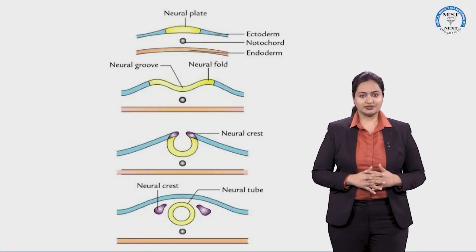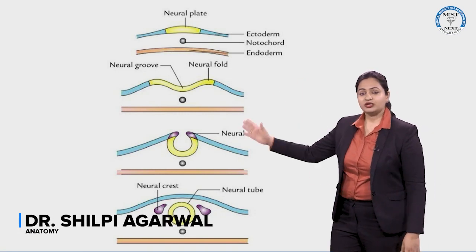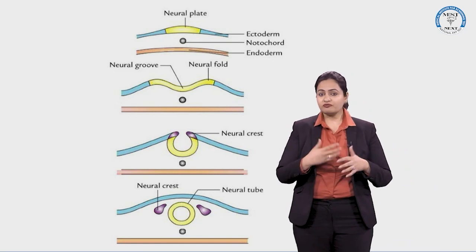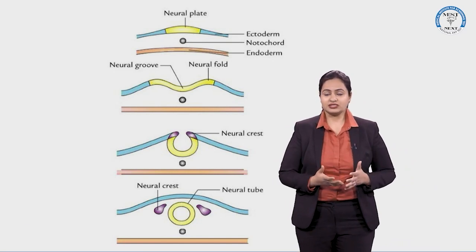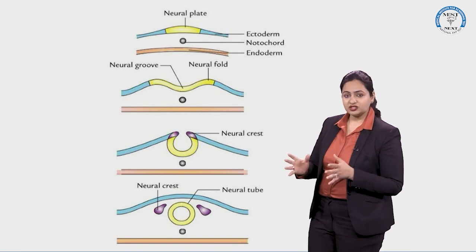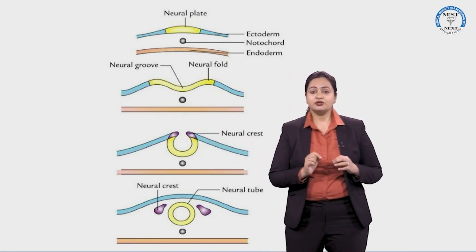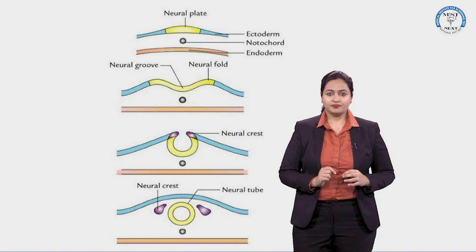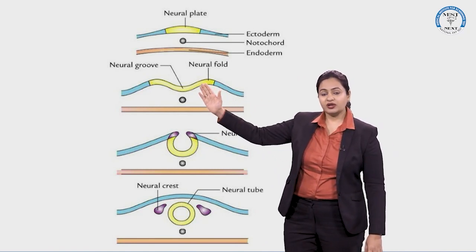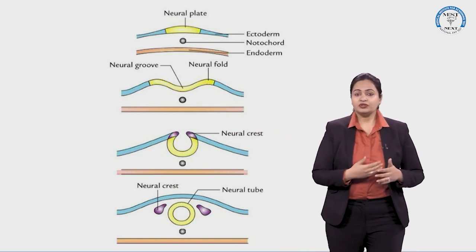Development of the central nervous system. For this, we should be aware of the formation of the neural tube, because the neural tube is the one which leads to the formation of the central nervous system. The neural tube formation is induced by the notochord, which induces the overlying ectoderm to form the neural plate.